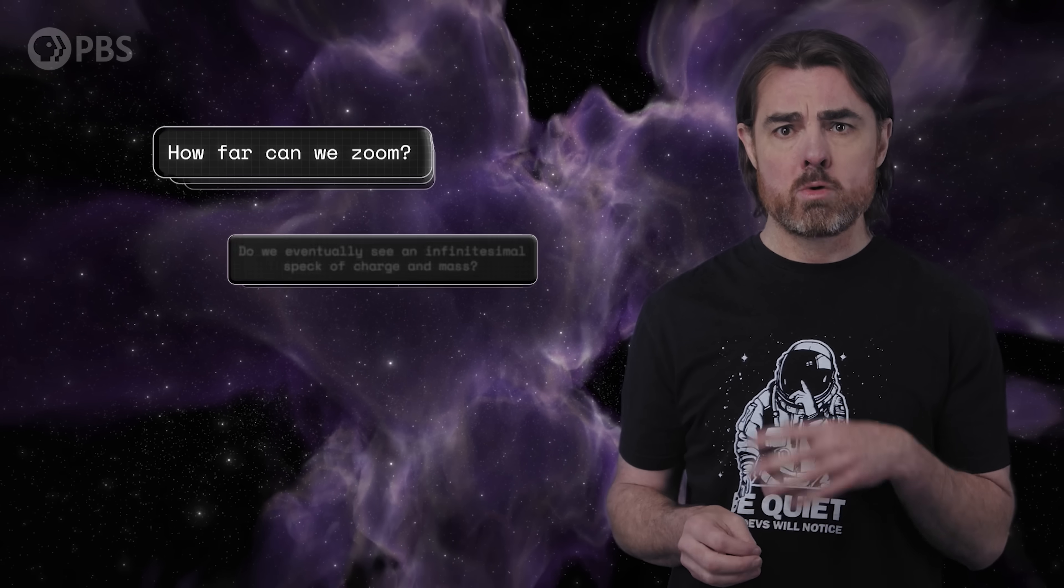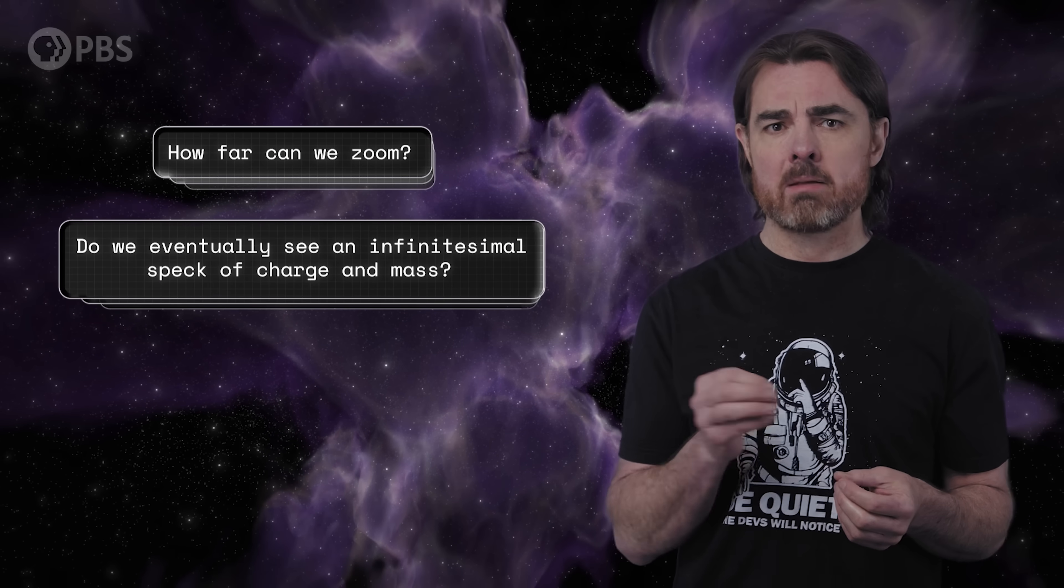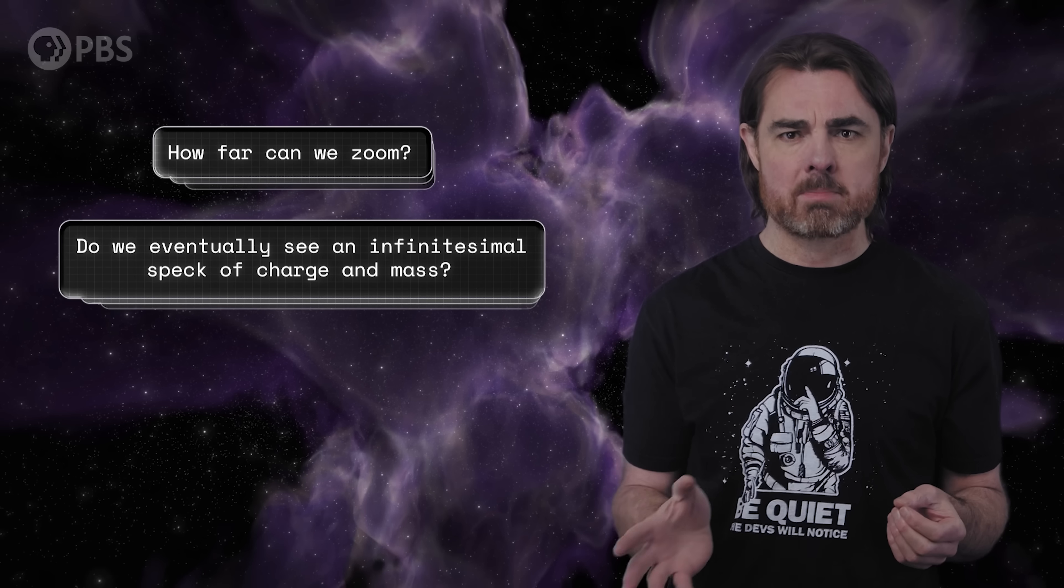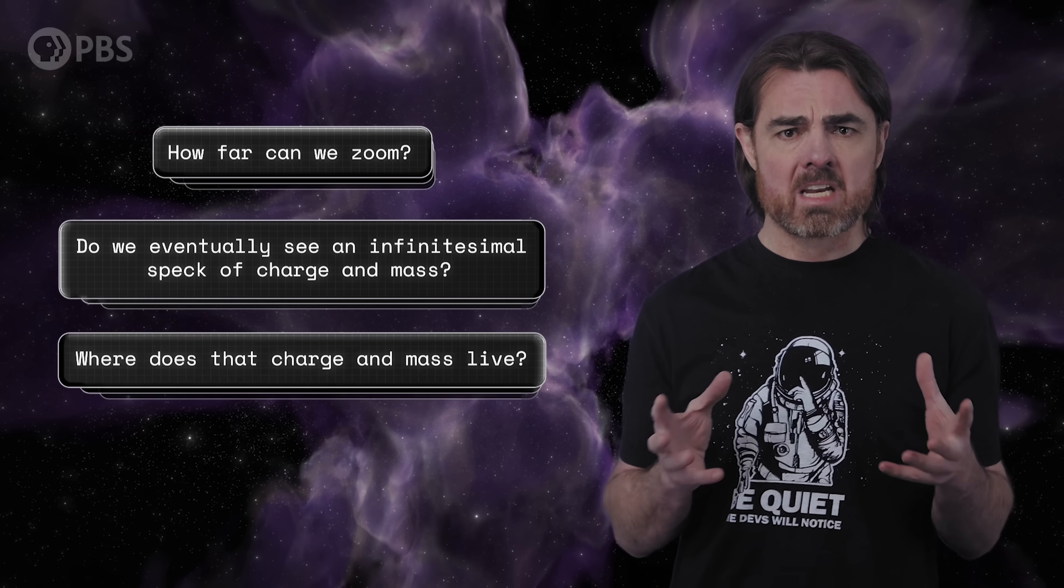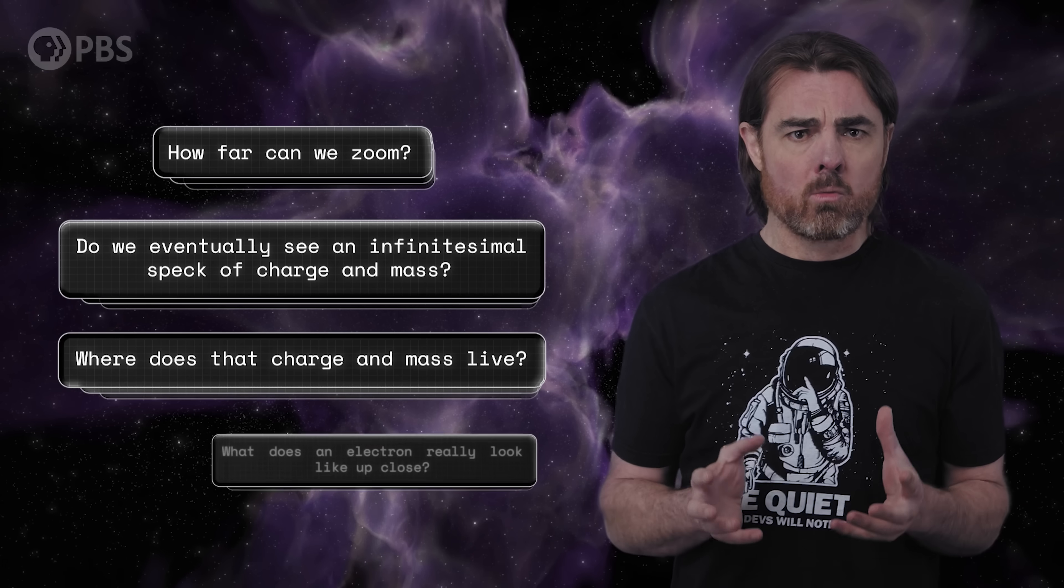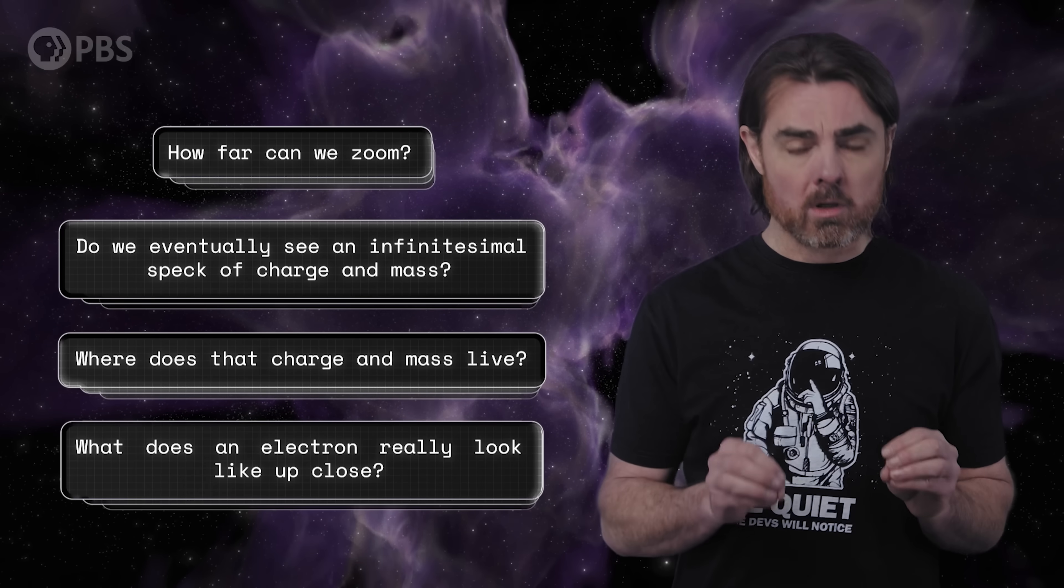We can never actually see a fuzzy wave packet because the electron takes on precise properties when we measure it. Looking at the electron means resolving its location and spatial structure. As we measure more precisely, the wave function shrinks to something particle-like. But how far can we zoom? Do we eventually see a tiny ball or an infinitesimal speck of charge and mass? And where does that charge and mass live? What does an electron really look like up close?